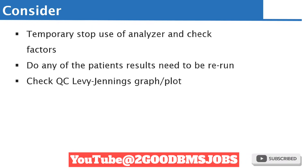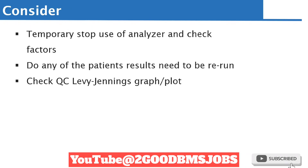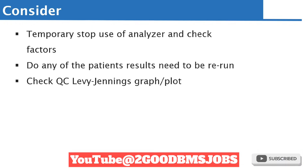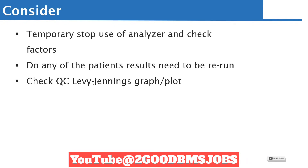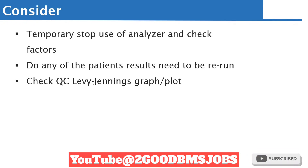When you open the Levey-Jennings graph, you need to know exactly what failed. For example, if you run a quality control sample on many parameters, you need to ask yourself: what exactly is failing? Is it all the parameters failing, or just one? For example, if you run a quality control on a full blood count sample, that measures hemoglobin, hematocrit, WBC differentials, and so on.